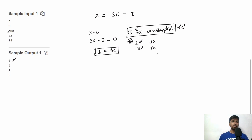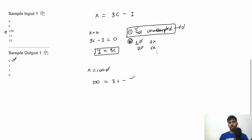For the second test case, X = 100. So 100 = 3c - i and we want i to be minimum. We divide 100 by 3: 33 times gives 99, so the remainder is 1. This means if chef attempted 33 problems all correctly, chef gets 99 marks, and one extra mark remains.